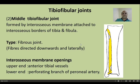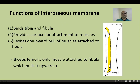The middle tibiofibular joint is called the interosseous membrane, which extends from and is attached to the interosseous borders of the tibia and fibula respectively. This is a fibrous joint whose fibers are directed downwards and laterally. There are two openings: the upper opening is for the anterior tibial vessels and the lower opening is for the perforating branch of the peroneal artery. Functions include binding the tibia and fibula together, providing area for muscle attachment, and resisting the downward pull of muscles attached to fibula — biceps femoris being the only exception as it pulls the fibula upwards.